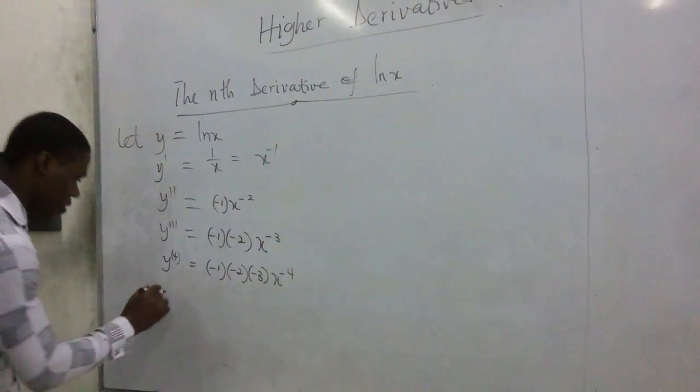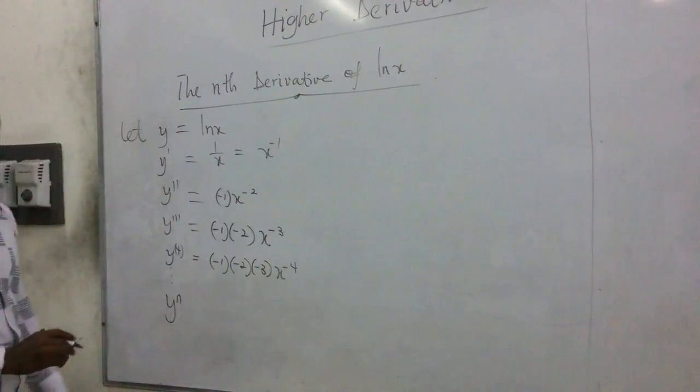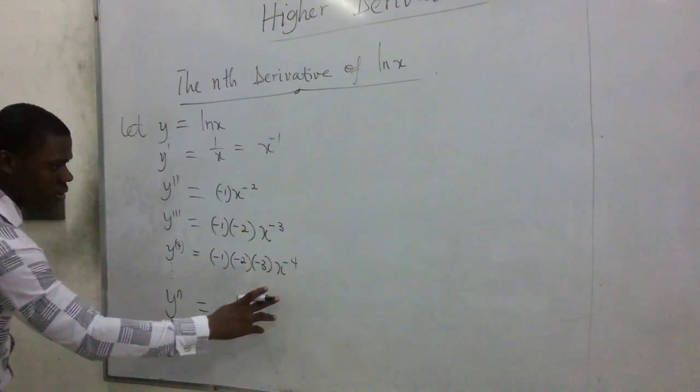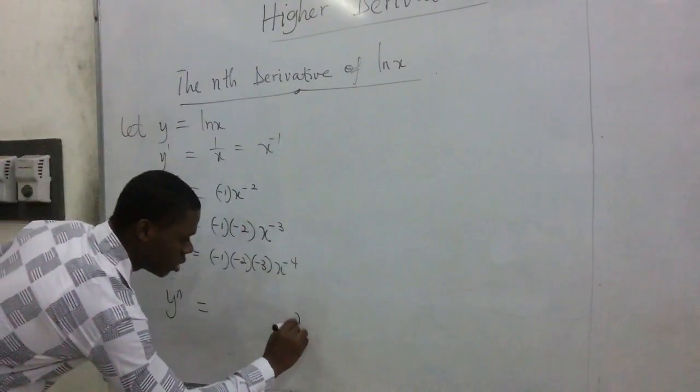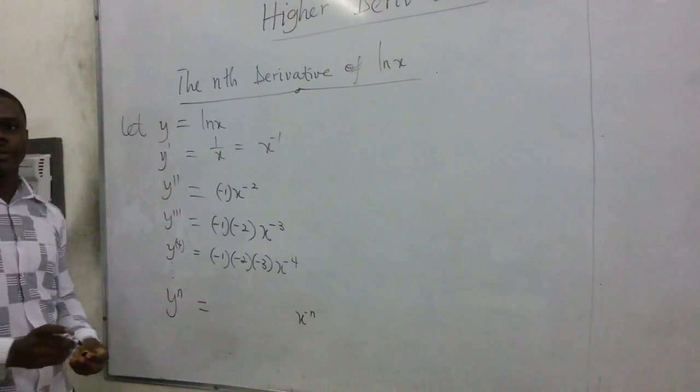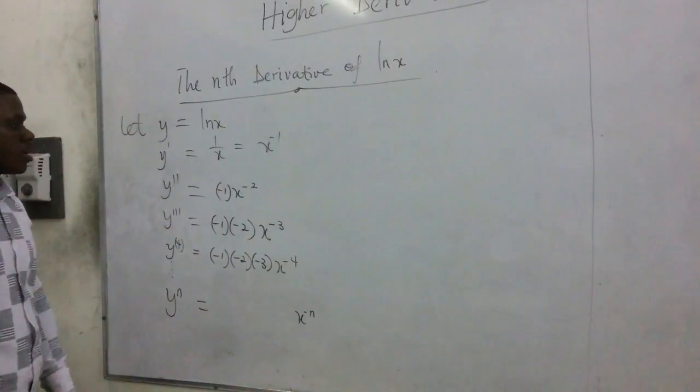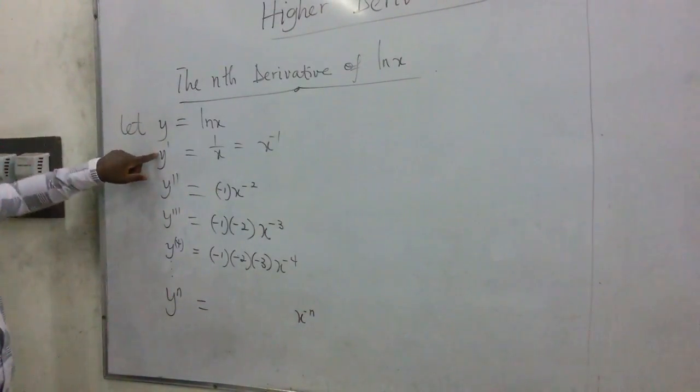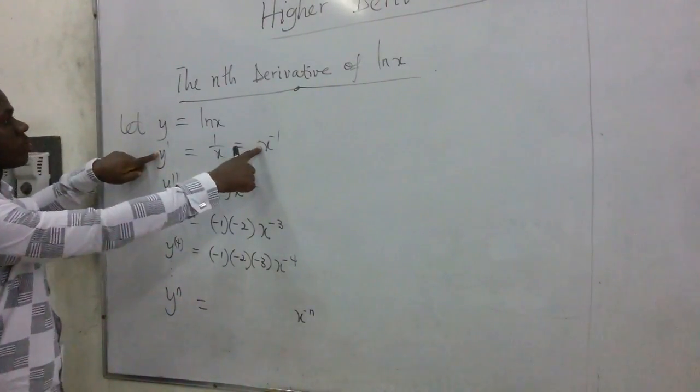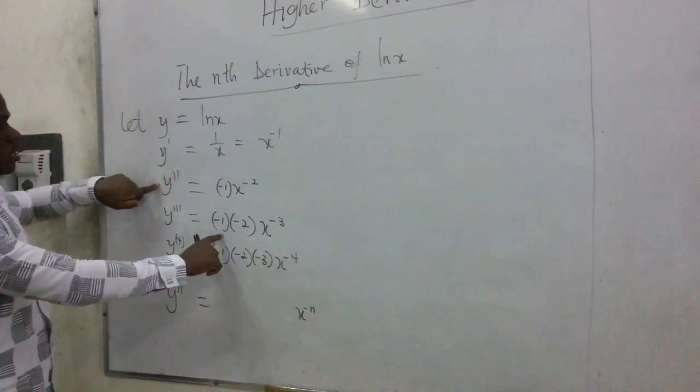So we can say that if this one continues at the nth derivative, then it's going to be equal to whatever is here. Then the exponent is n. So we've started looking at it from this aspect. But when we come to this aspect here, we realize that after this one, there is still negative 1 here. This has negative, this one too has negative.